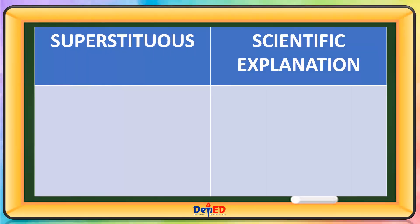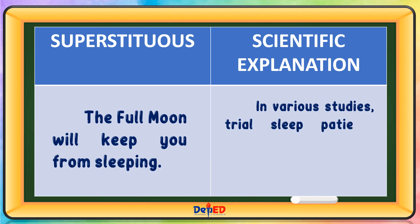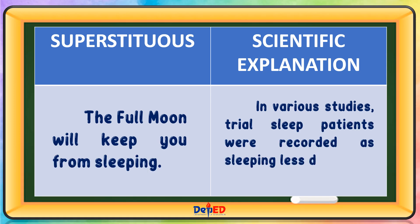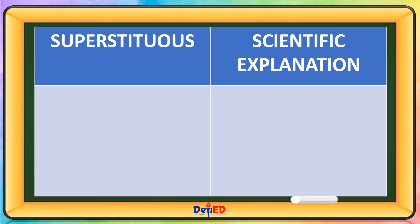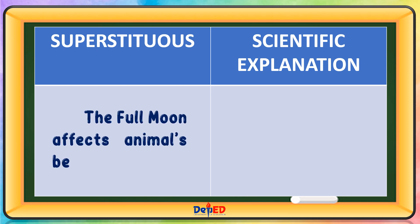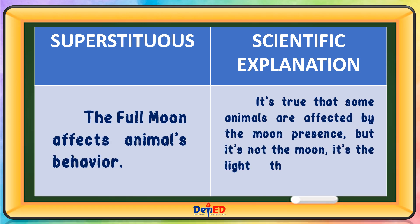Superstitious Belief: The full moon will keep you from sleeping. Scientific Explanation: In various studies, trial sleep patients were recorded as sleeping less during the full moon. Superstitious Belief: The full moon affects animals' behavior. Scientific Explanation: It's true that some animals are affected by the moon's presence, but it's not the moon itself — it's the light that's affecting them.